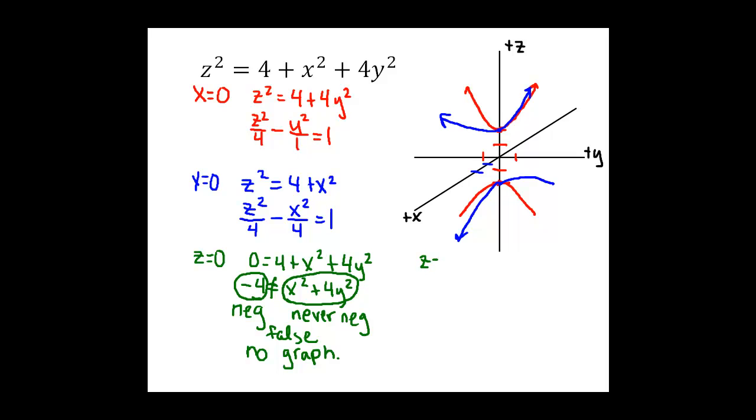And because of the squares in this equation, I can actually do z equals positive and negative 4 all at the same time. When I plug in positive and negative 4, I'll get 16 equals 4 plus x squared plus 4y squared.